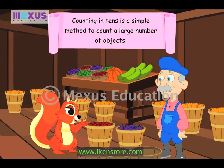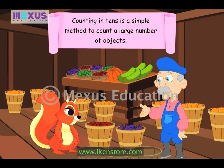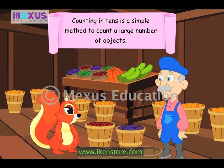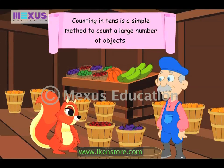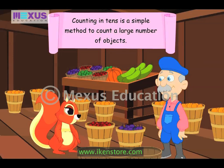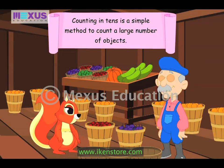How can we count in tens, Uncle Bob? All you need to do is make groups of ten objects. So each group will be equal to one ten. You just have to count the number of tens to find the number of objects. Let us count the number of tomatoes using this method.